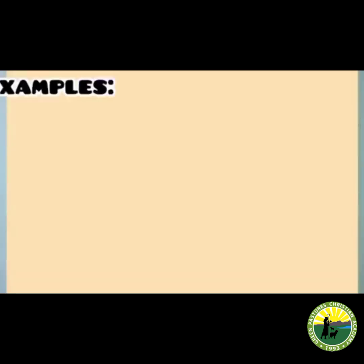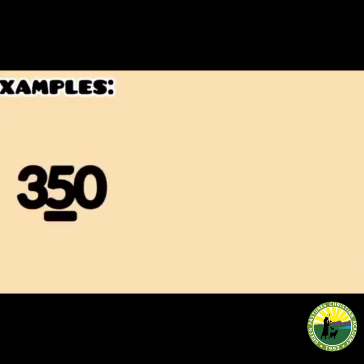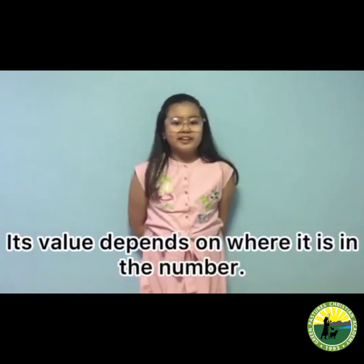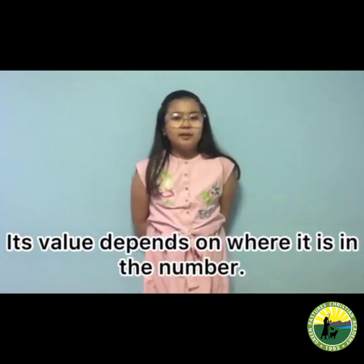For example, the 5 in 350 represents the place value of tens, or the 1 in 1,879 represents the place value of thousands. It is important that children understand that a digit can be the same — its value depends on where it is in the number.